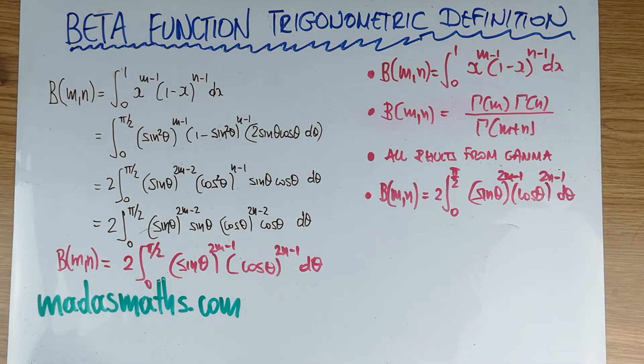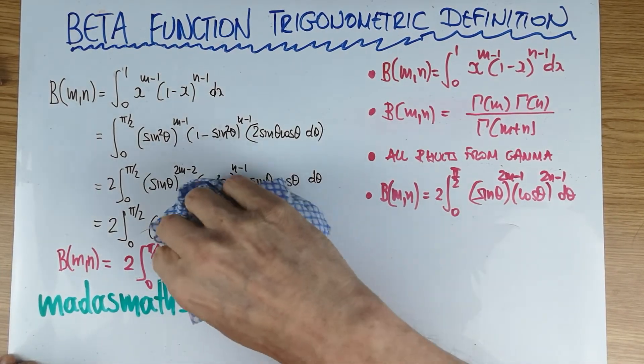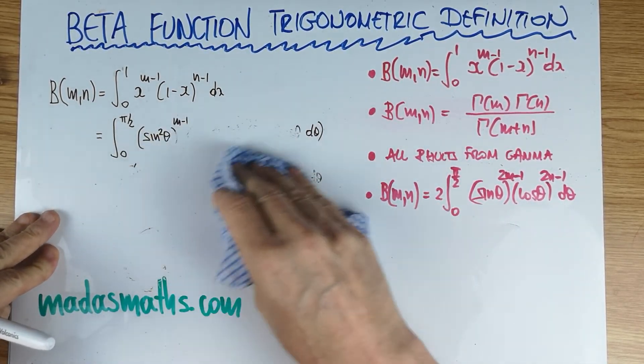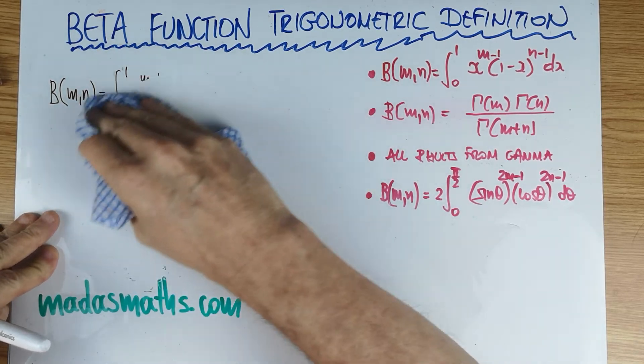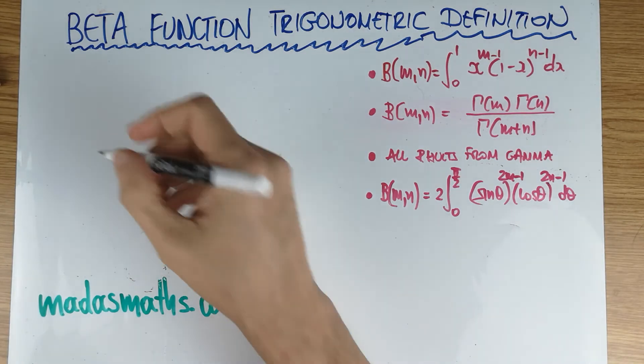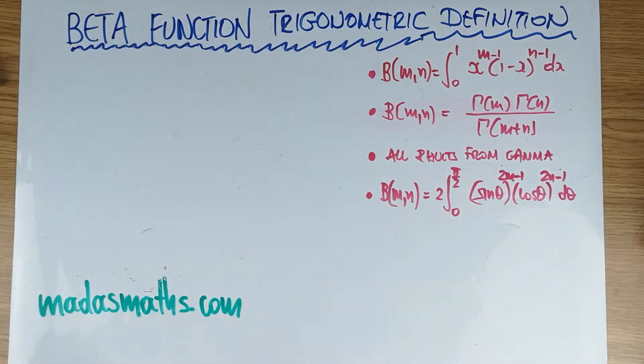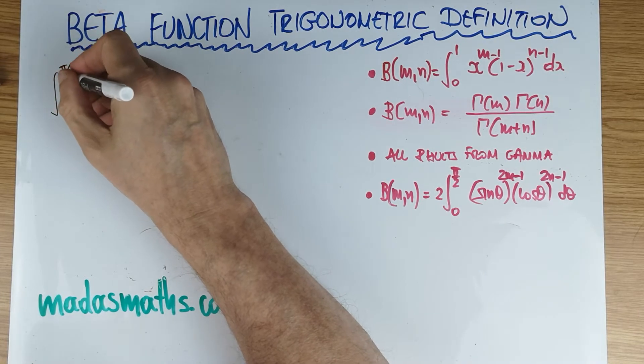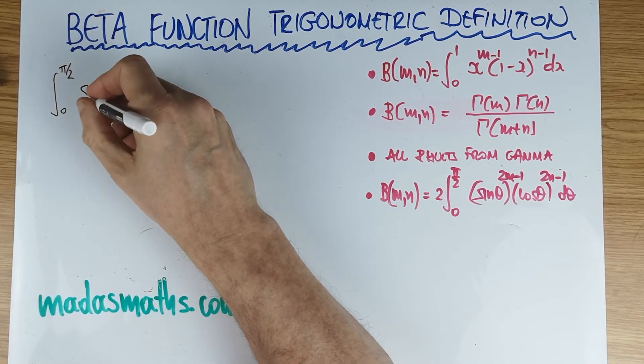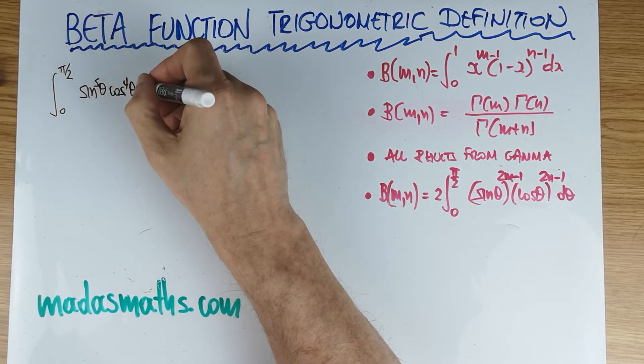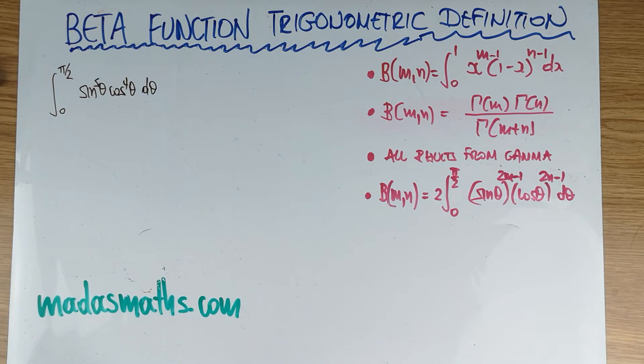Let's look at an example now using this result. This result is very, very useful. In higher level maths, I use it so often because these integrals come up a lot, and it's the best way to evaluate them. Suppose we got 0 to pi over 2, sine to the 5 of theta, cos to the 4 of theta, d theta. How do we do something like that?